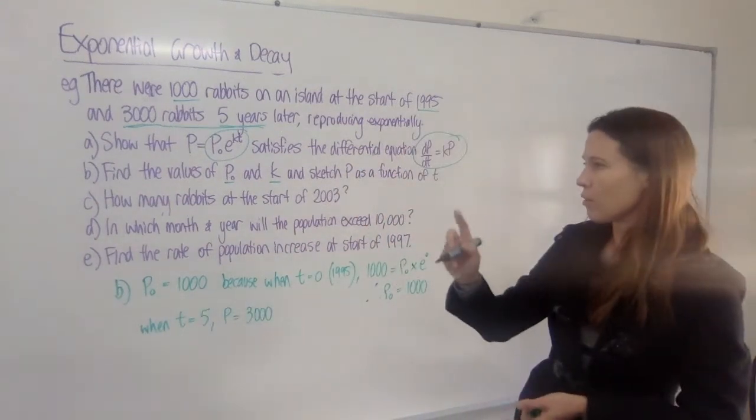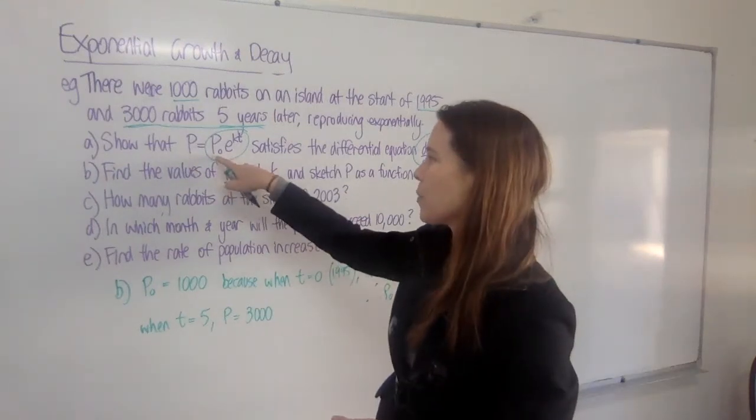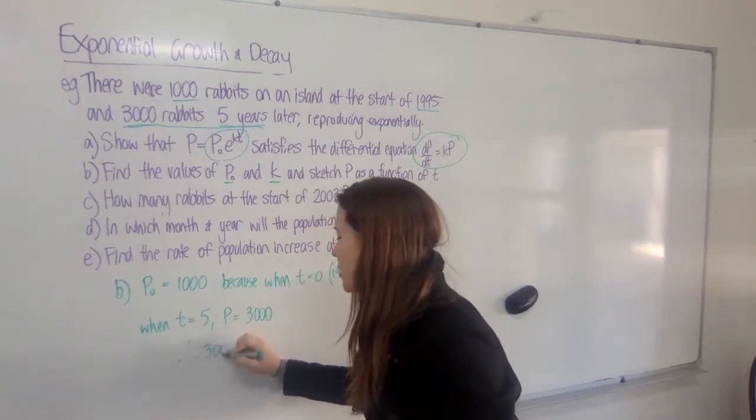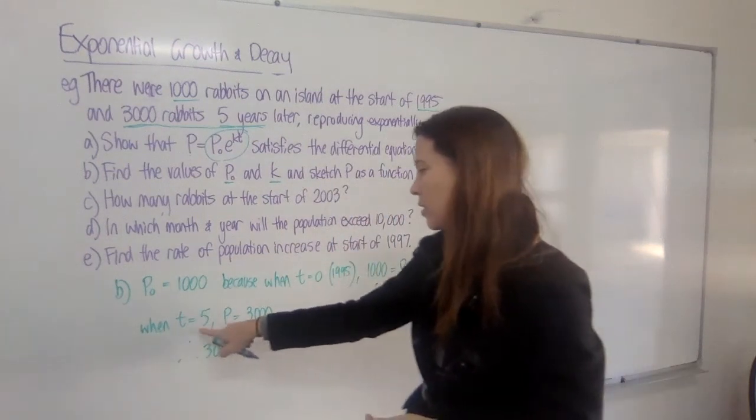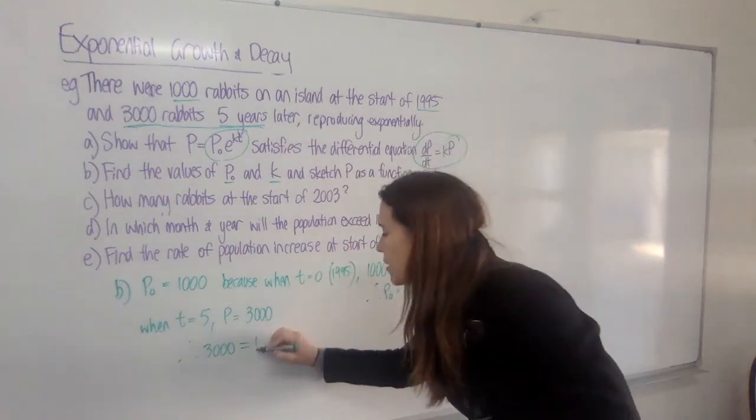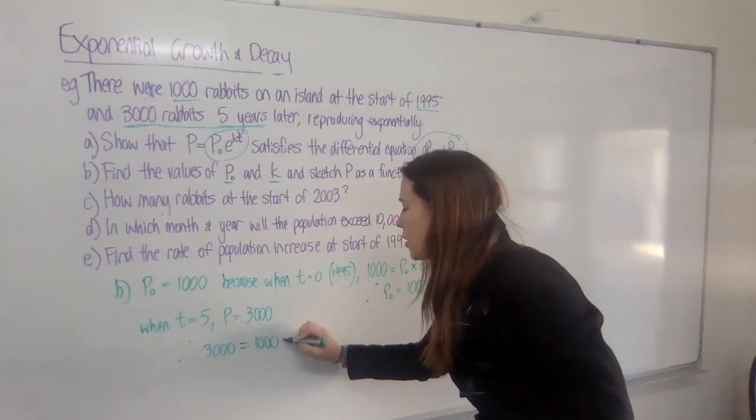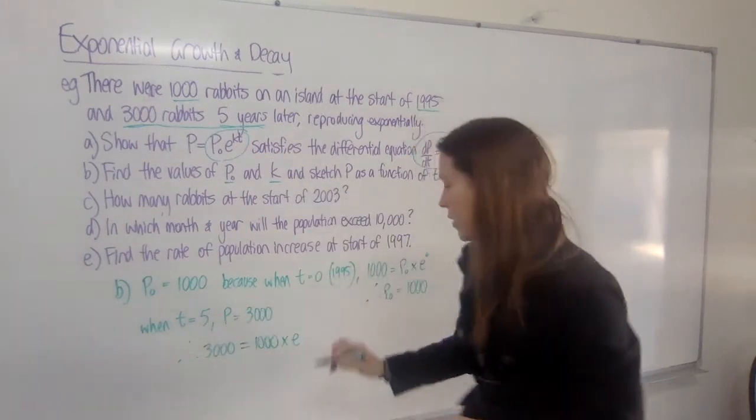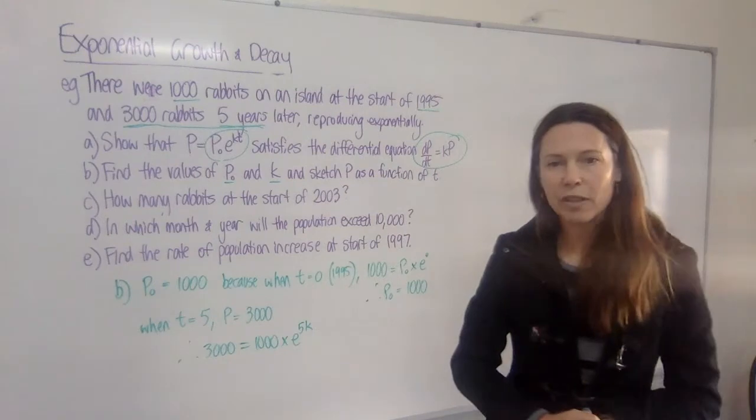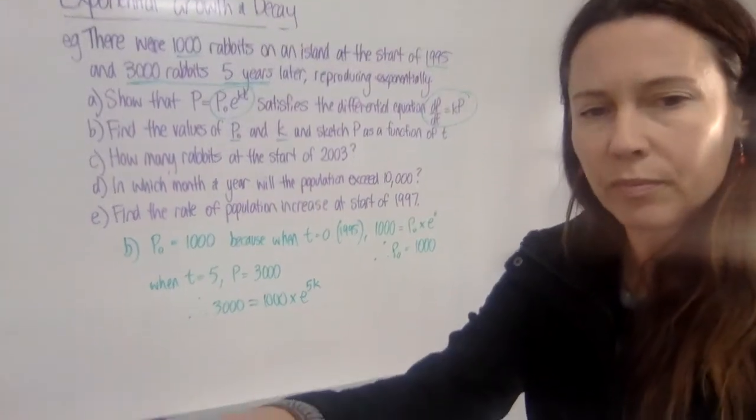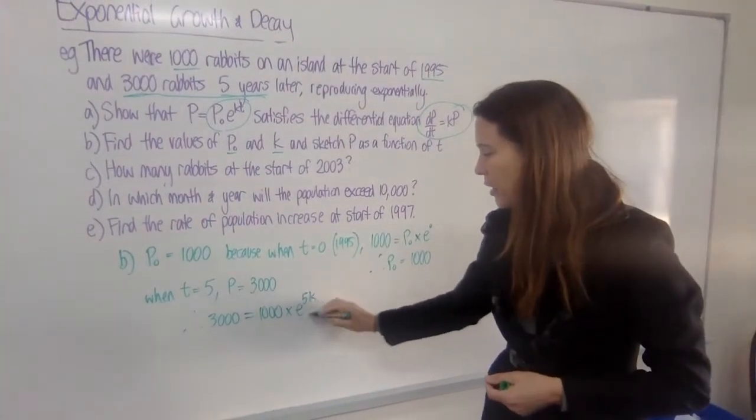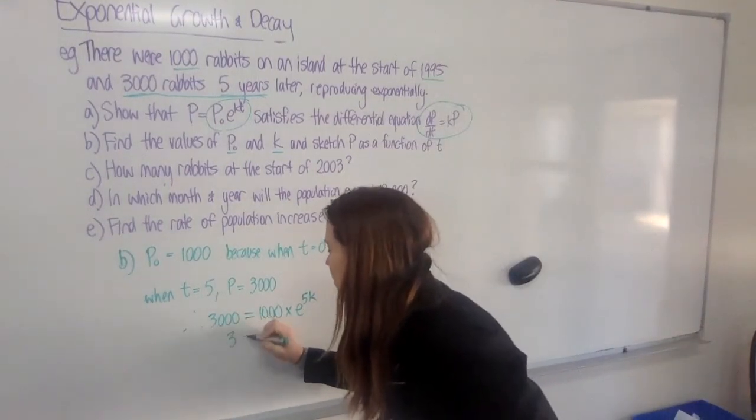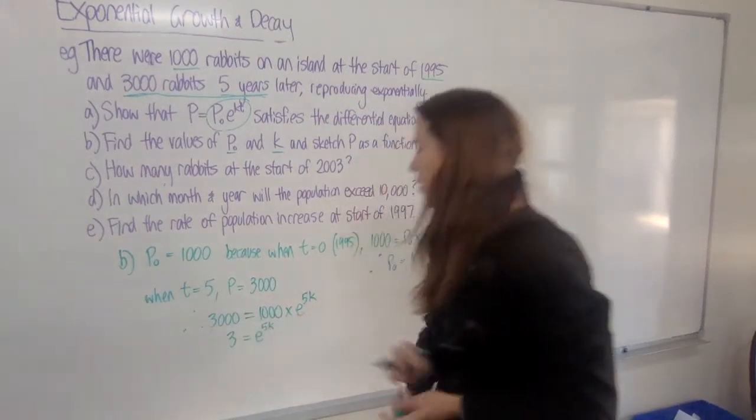So now I have a better formula for the population. I know that this P₀ is actually 1,000. So therefore, 3,000, that's the population, when the time is 5, equals 1,000, that's P₀, times e to the power of k times 5. So I'm going to write that as 5k. All right, we've got a little equation here to solve. So the easiest thing to do to get this part by itself first is divide both sides by 1,000. So dividing this side by 1,000 gives me 3. And now I've got e to the power of 5k.